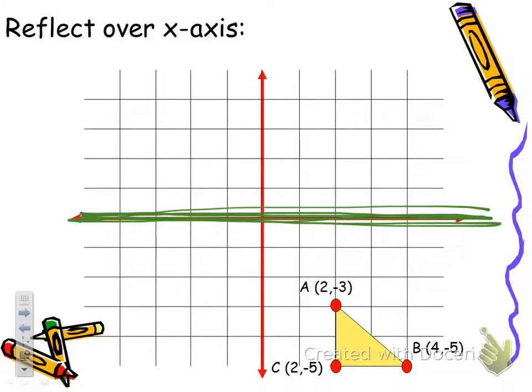When we do reflections, that is going to be called our mirror. So I have to find out how many units it takes to get from each point to the mirror, and then go that same distance away from the mirror.